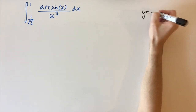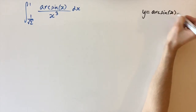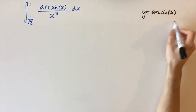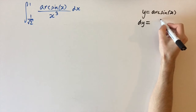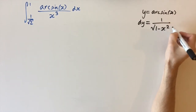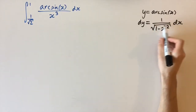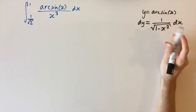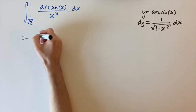We let y equal arcsin(x). We can differentiate this, so dy equals 1 over the square root of 1 minus x squared, dx. This is a standard result. Before substituting in, we need to think about the new limits.